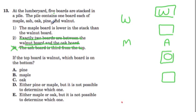So now we know that the maple board is lower in the stack than the walnut board. And here, well, this means that there are two spots for the maple. It can go here or here.